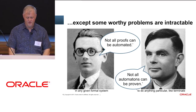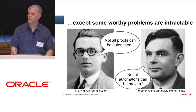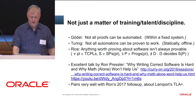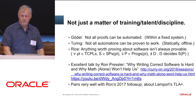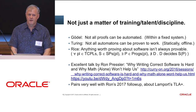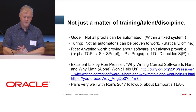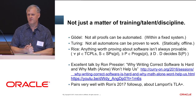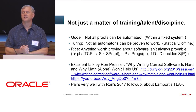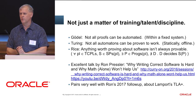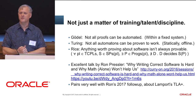Our friend Turing was saying not all automata can be proven to halt. So it's not just a matter of training, talent, or discipline. There are some things that really are too hard. There's a theorem by Rice that says anything that you need to prove about software that isn't trivial is going to be occasionally impossible to prove except by running the software.